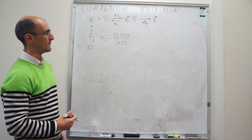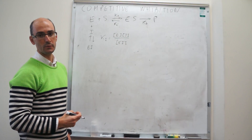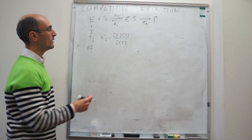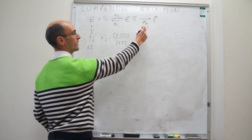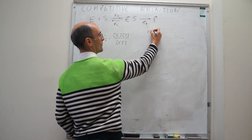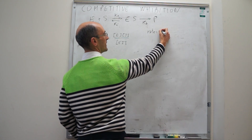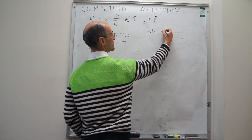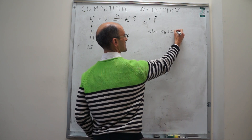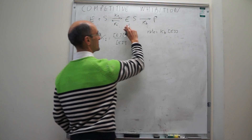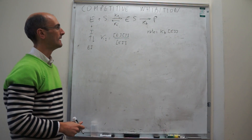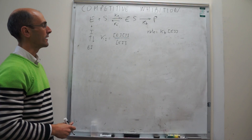This is our reaction mechanism. The rate of product formation we can write down right away — it is simply K_B times the concentration of ES. That is the rate of the last step, the only one that is producing products.